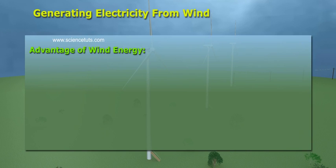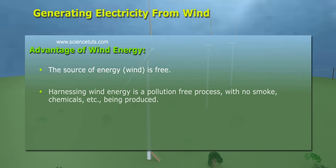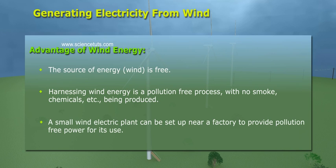Advantage of Wind Energy: The source of energy, wind, is free. Harnessing wind energy is a pollution-free process with no smoke, chemicals, etc. being produced. A small wind electric plant can be set up near a factory to provide pollution-free power for its use.